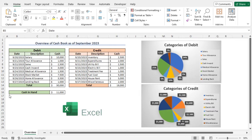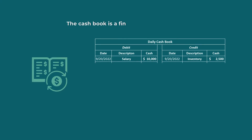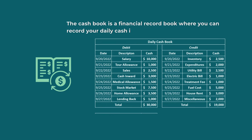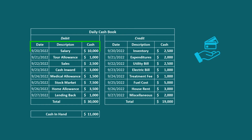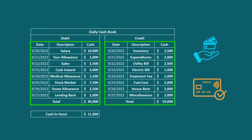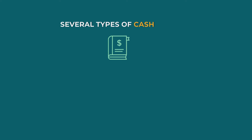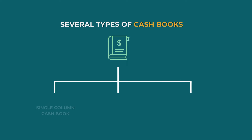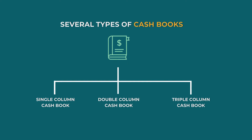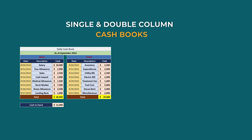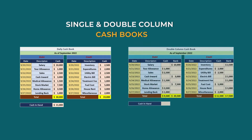For this video, I will use Microsoft Excel 365. Let's quickly refresh our idea about the cashbook. The cashbook is a financial record book where you can record your daily cash-in and cash-out. It contains debit and credit sides where you can input your cash receipts and cash payments. There are several types of cashbooks like the single column, double column, and triple column cashbook. In this tutorial, I will create the single column cashbook and the double column cashbook.